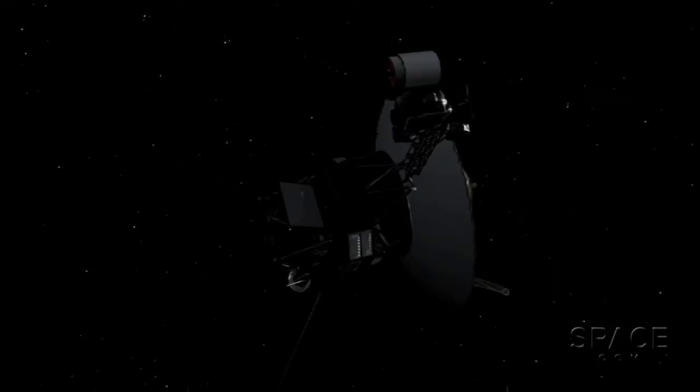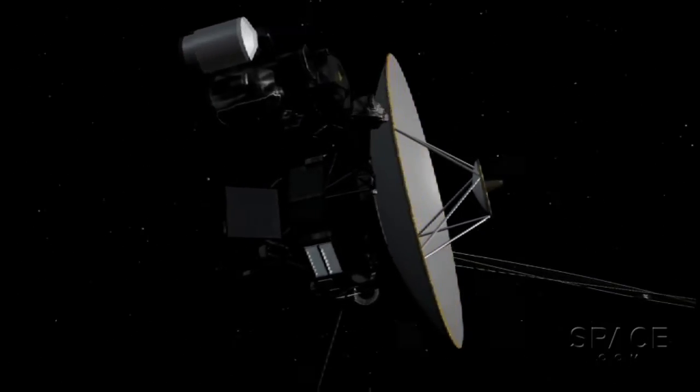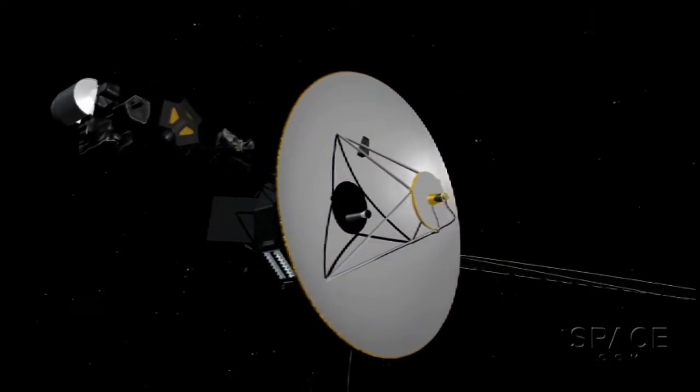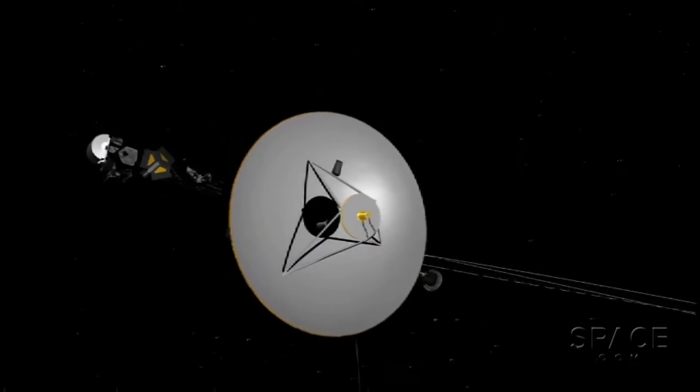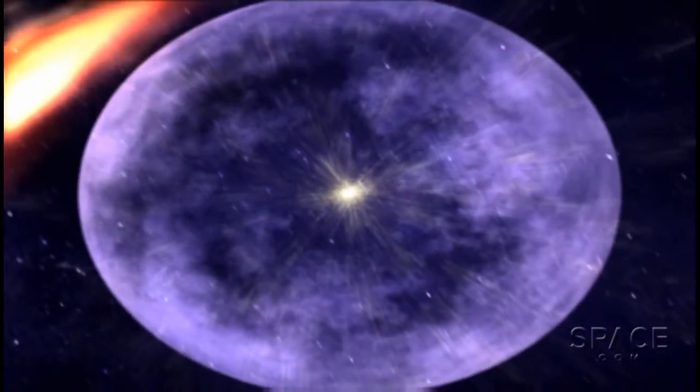It's been the topic of some debate among solar system scientists, but analysis of new data from NASA's Voyager 1 strongly suggests that the probe has left the ecosystem of the Sun and entered true interstellar space.